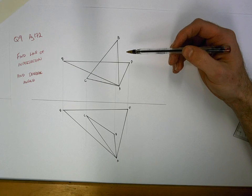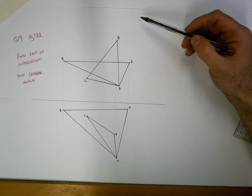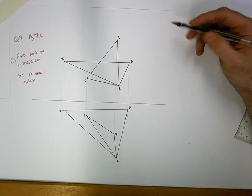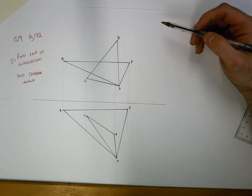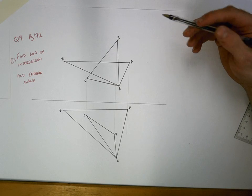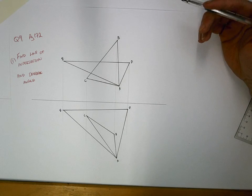Now the question is asking us to do two things. First, it's asking us to find the line of intersection. Now the line of intersection, usually in a simple question, if there were two points being shared between two planes, you just join them together and that's the line of intersection.